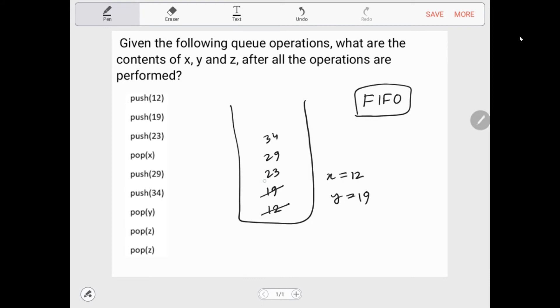23 is popped and stored in z. We pop z again—29 is popped, z is overwritten. Z equals 29.